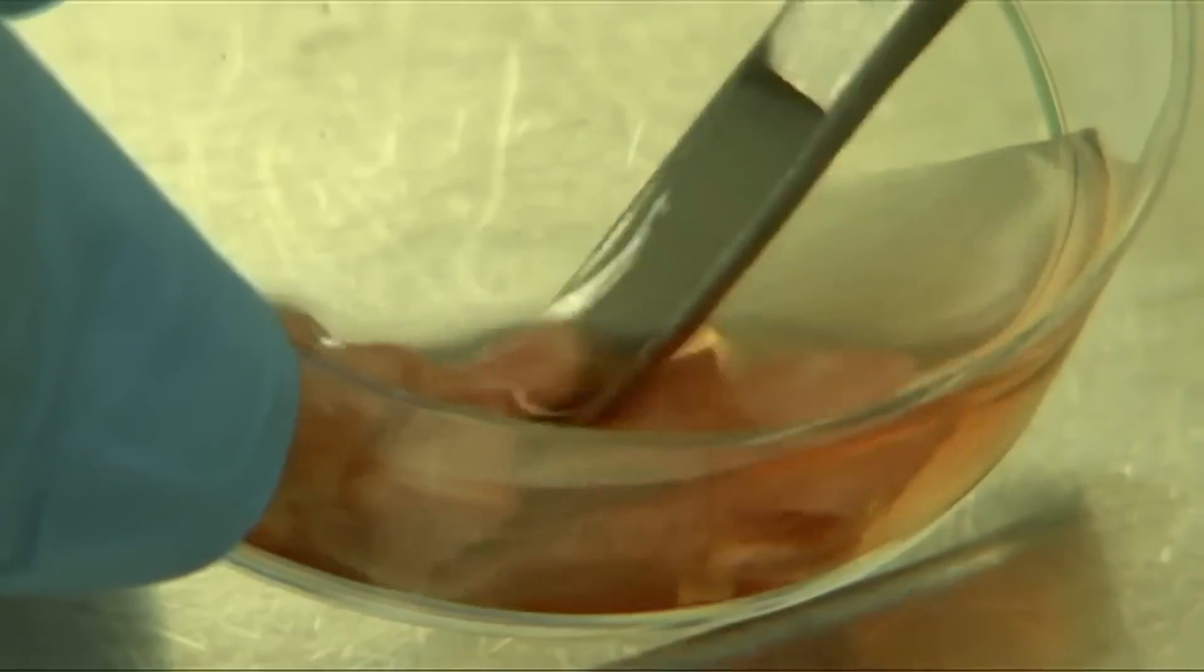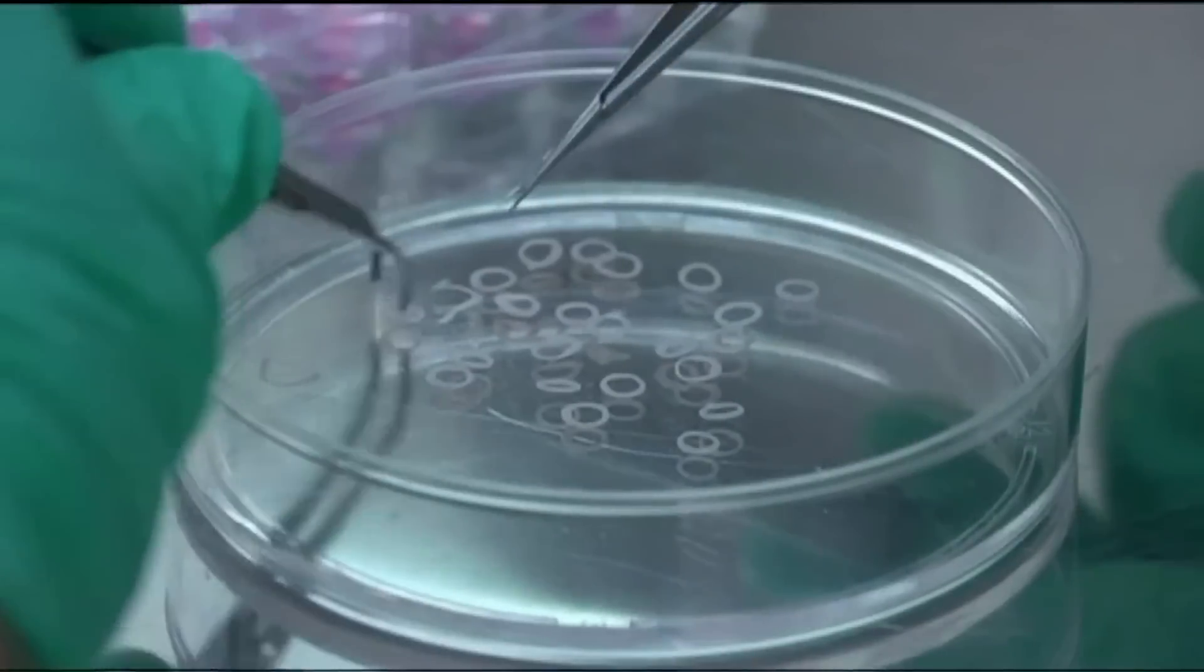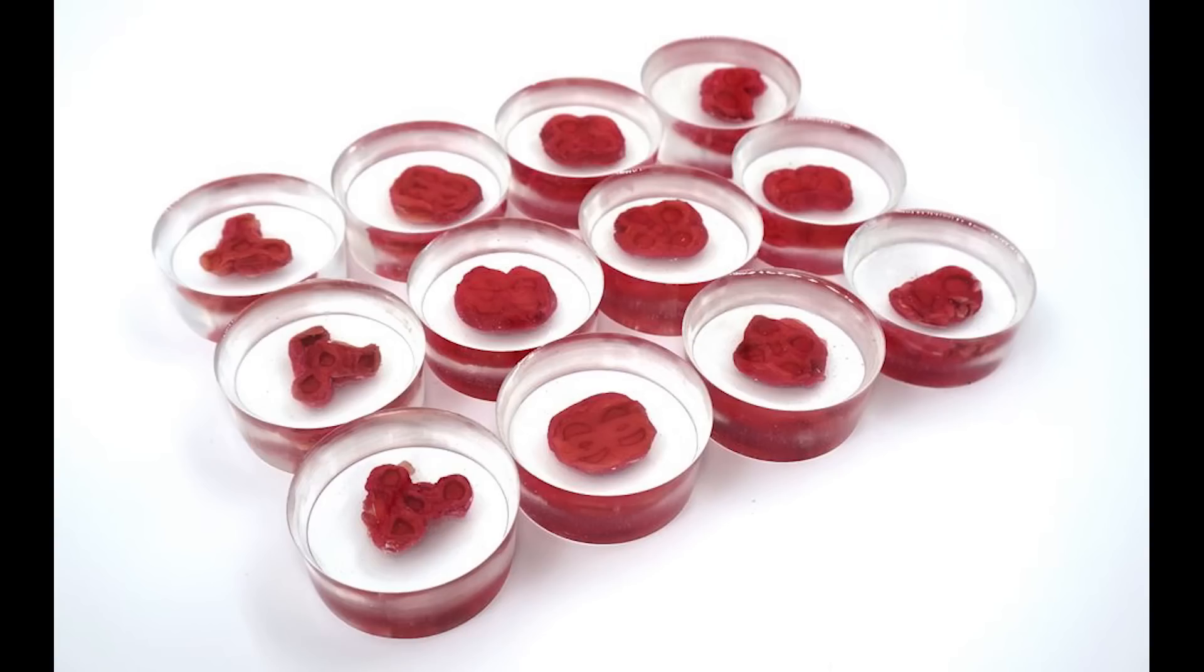The cells are then fed serum from expired donated blood, which would have otherwise been disposed of. The result are bite-sized pieces of meat grown from your very own cells.